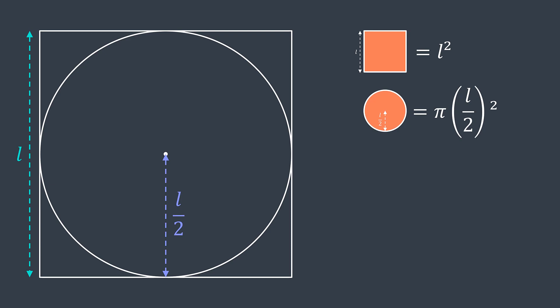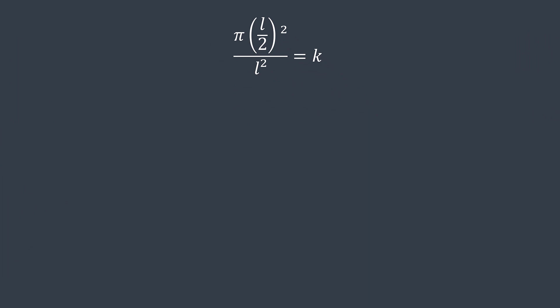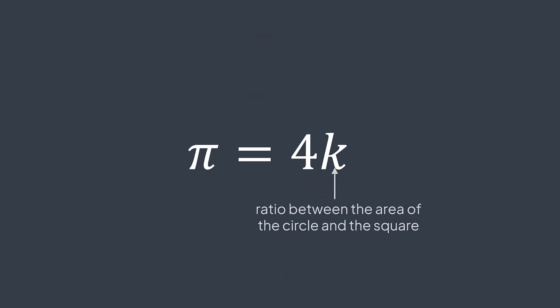Let's name the ratio between these two areas K. K is the area of the circle divided by the area of the square. Let's simplify the equation. L divided by two squared is L squared divided by four. We multiply both sides by L squared, we multiply both sides by four, we remove L squared from both sides, and we get this equation: Pi is equal to four times K, the ratio.